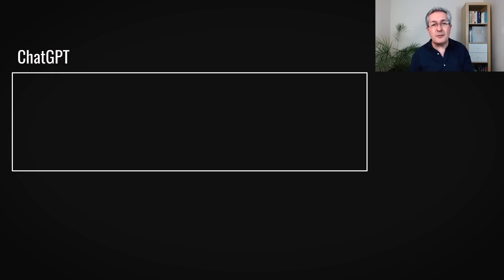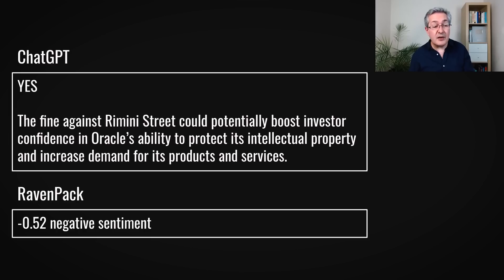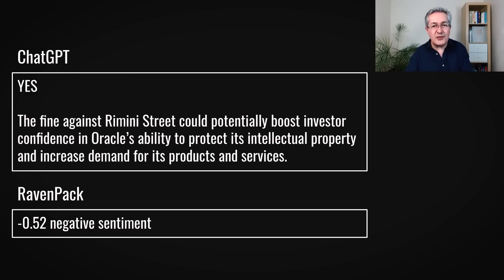ChatGPT's response to that prompt was 'yes' — the headline is good for the stock. Its explanation is actually quite sophisticated: the fine against Rimini Street could boost investor confidence because it shows Oracle can protect its intellectual property, and that could indirectly increase demand for Oracle's products and services. That's quite a good answer. Compare that with a response from Ravenpack, which came up with a minus 0.52 negative sentiment for Oracle. The language model's ability to infer relationships between words in the headline allows it to see through the immediate issue — a court settlement — and construe it as positive for the stock.